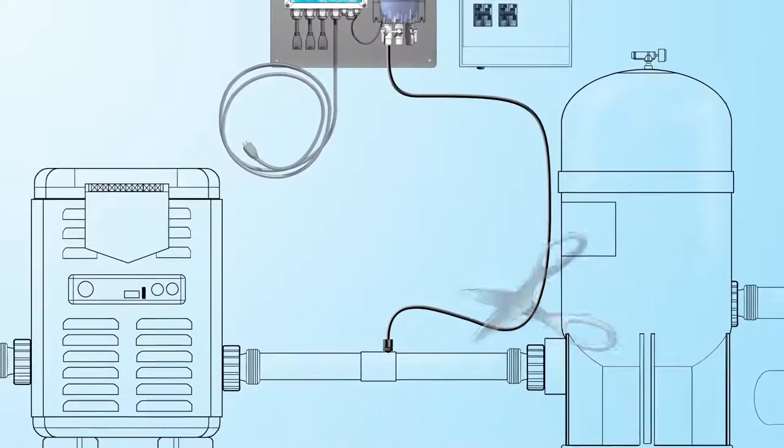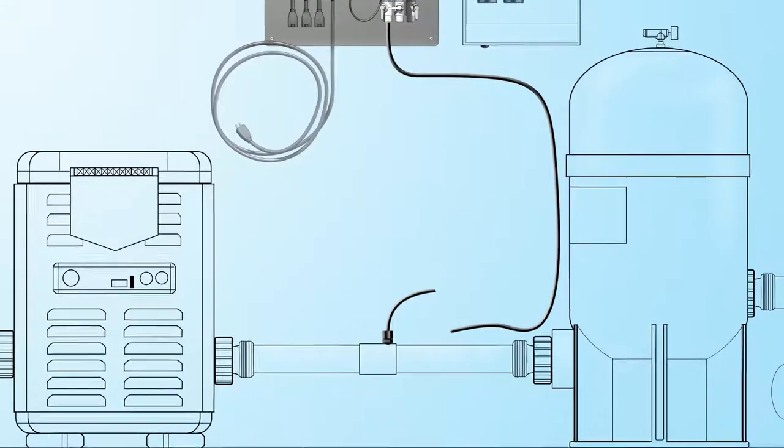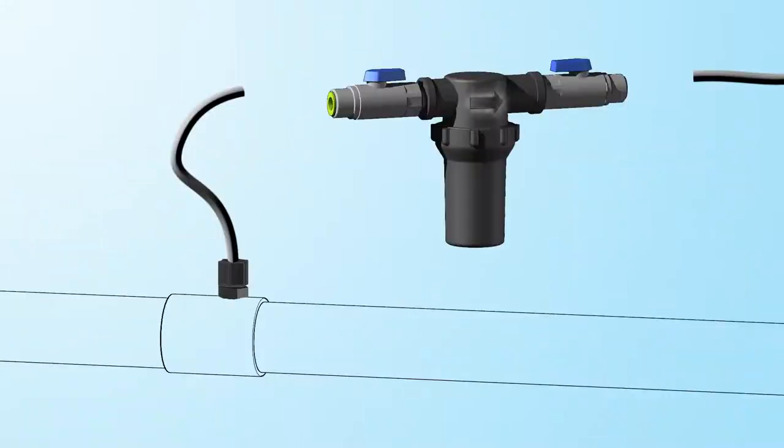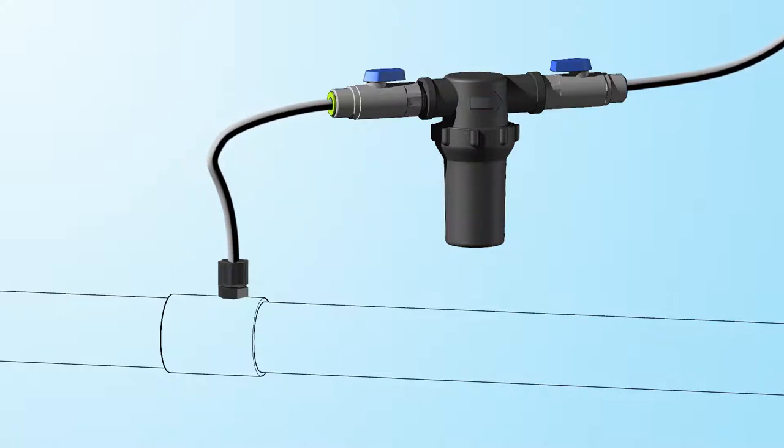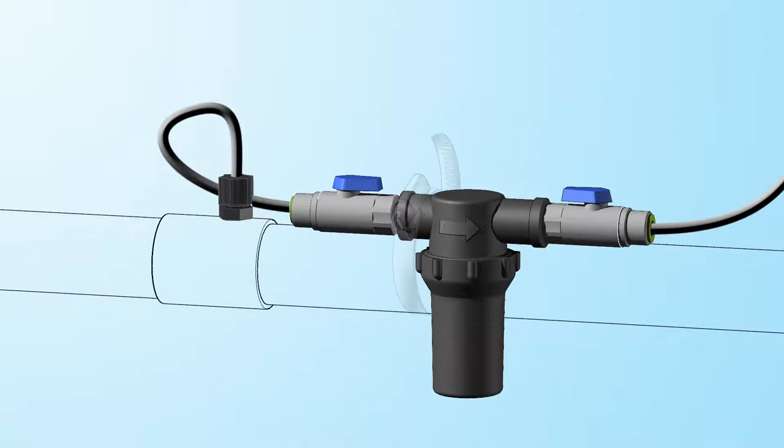To install the inline strainer, cut the tubing. Orient the strainer so that the arrows on the top are pointing in the direction of the flow of water, away from the pipe, and toward the flow cell. Insert the ends of the tubing into the valves on either end of the strainer. Using the hose clamps, secure the strainer to a pipe.